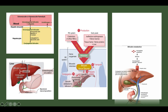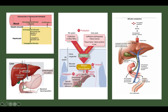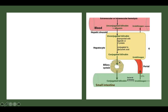Once conjugated bilirubin is formed, it travels down through the biliary system — through the bile duct and common bile duct — and enters the small intestine through the ampulla of Vater. Bacteria in the small intestine break down conjugated bilirubin into urobilinogen. About 10% of urobilinogen goes back through the hepatic portal system to the liver, then to the kidneys, where it is excreted in the urine.